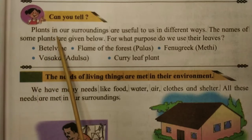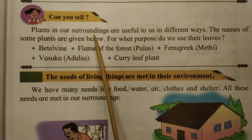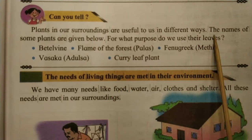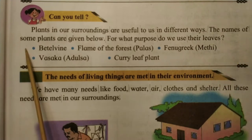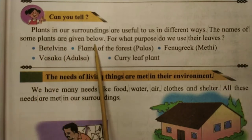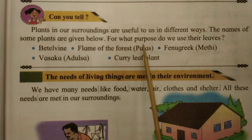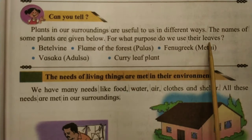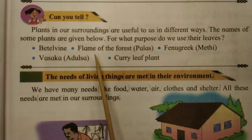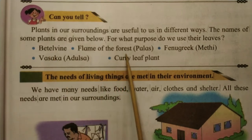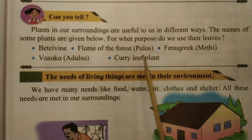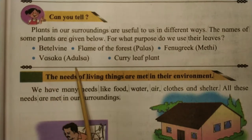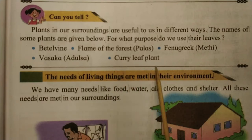Plants in our surroundings are useful to us in different ways. The names of some plants are given below. For what purpose do we use their leaves? Beetlevine, Flame of the Forest, Palash, Fenugreek, Methi, Vasaka, Adulsa, Curry Plant.